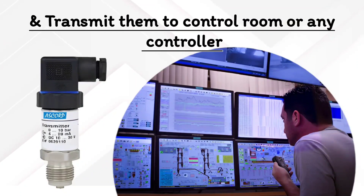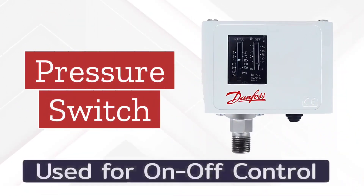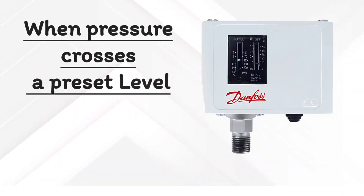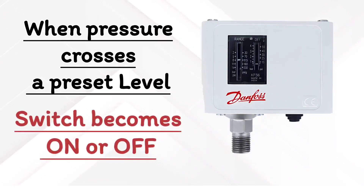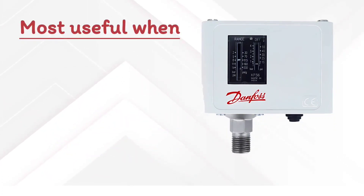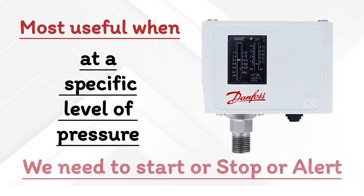The next option is the pressure switch. It is used for on-off control. When the pressure crosses a preset level, the switch turns on or off. This is very useful when we have to take alert or action at a specific level of pressure.